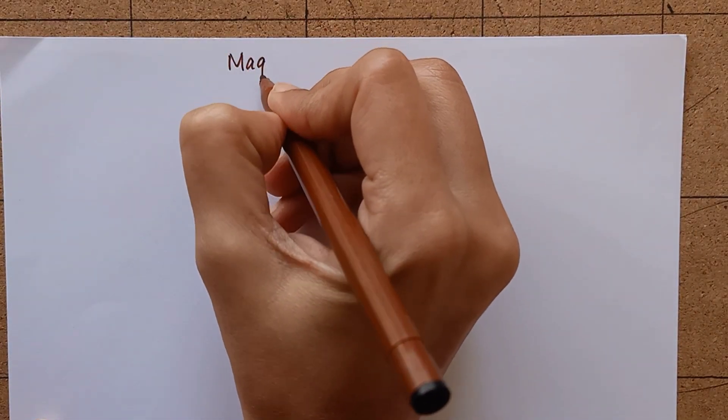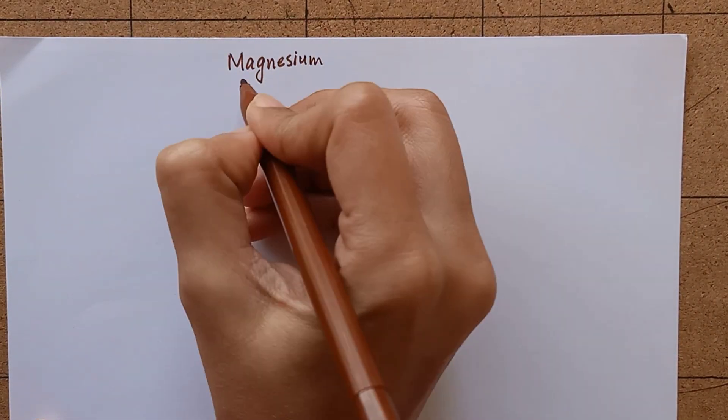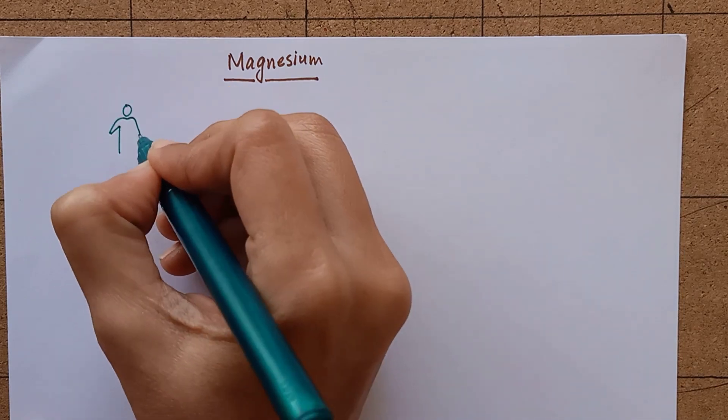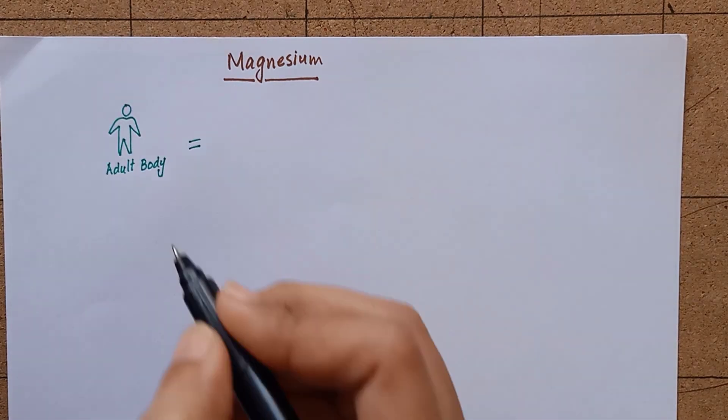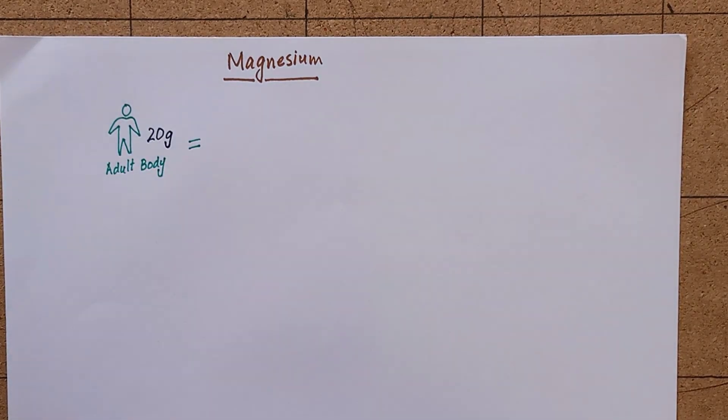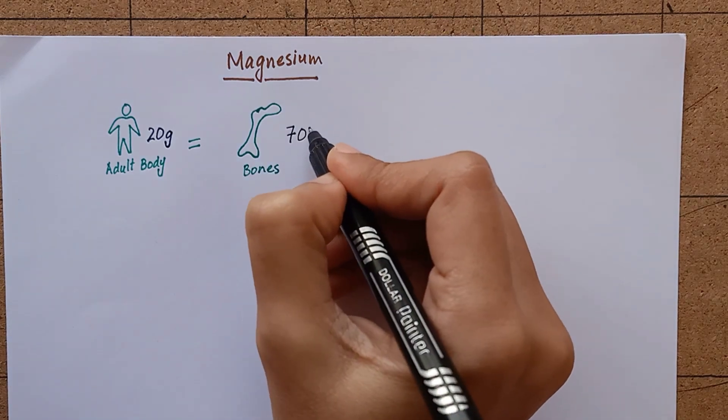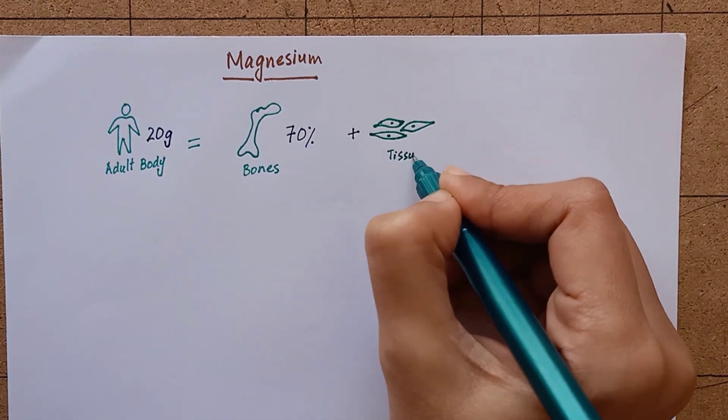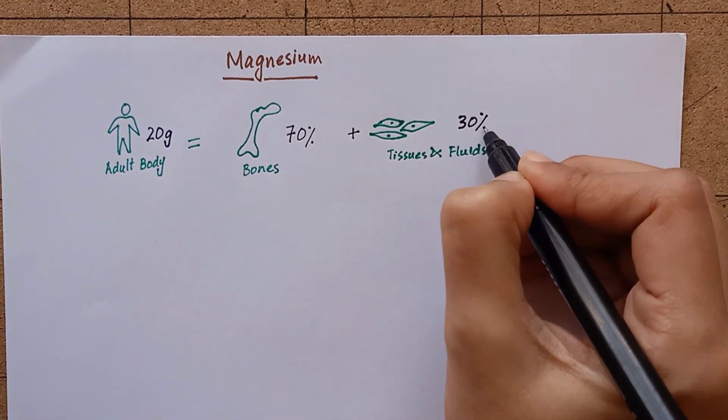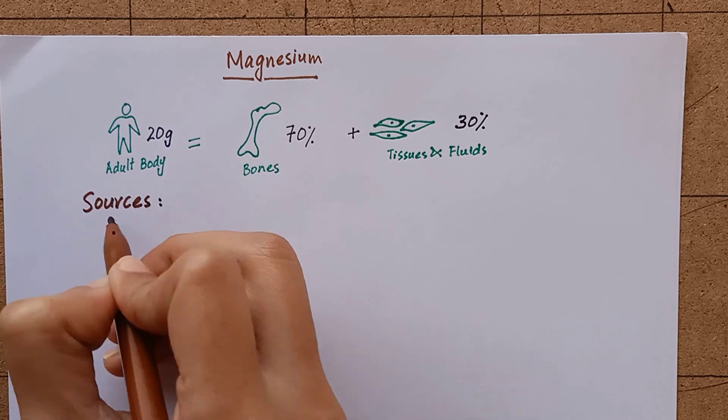The third element in our discussion of biochemistry of minerals is magnesium. An adult body contains about 20 grams of magnesium, 70 percent of which is found in bones. The remaining 30 percent is in soft tissues and body fluids.